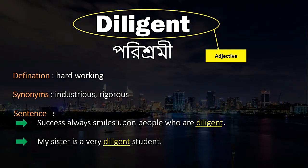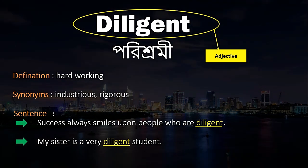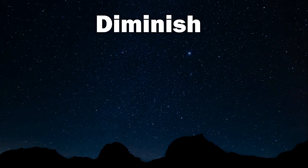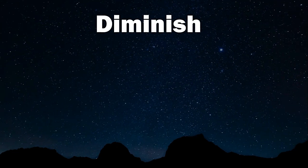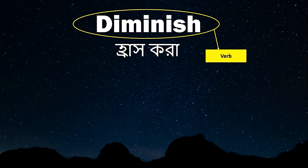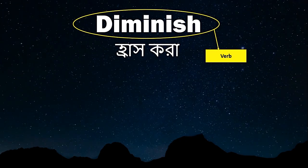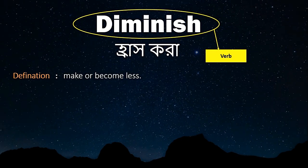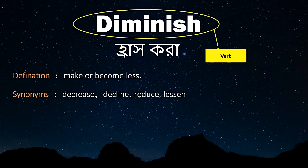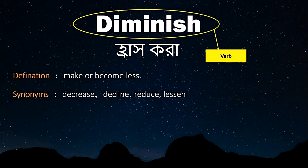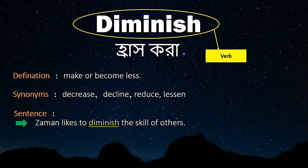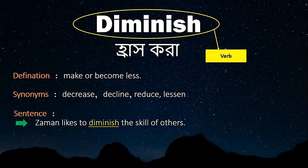The next one is 'diminish'. Diminish is a verb. Bangla meaning: rush kura. Definition: to make or become less. Synonyms: decrease, decline, reduce. Sentence: Jaman likes to diminish the skill of others.